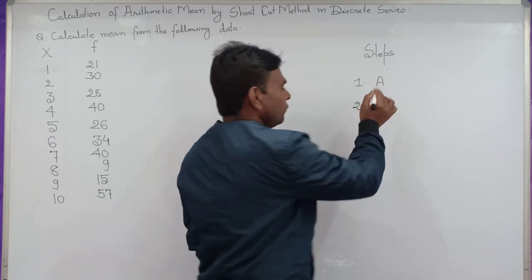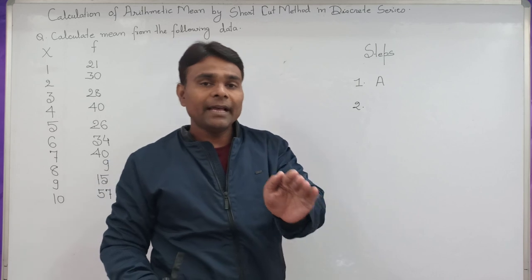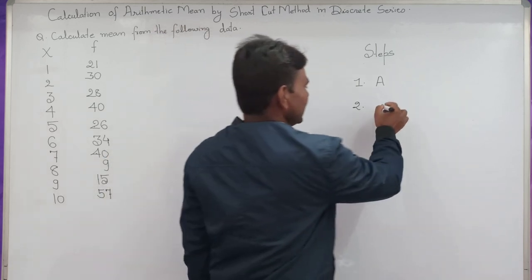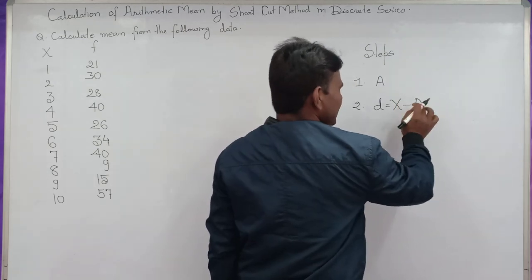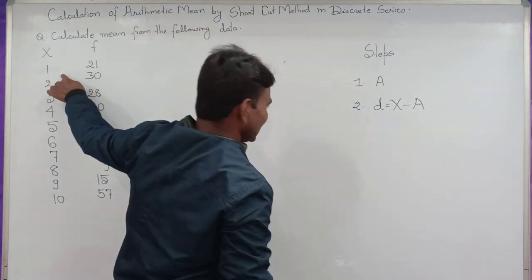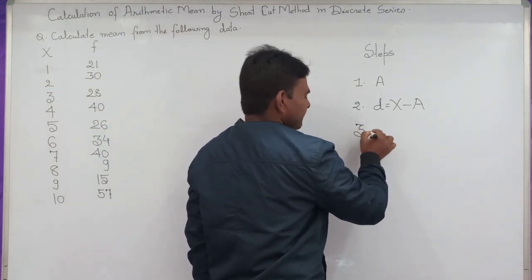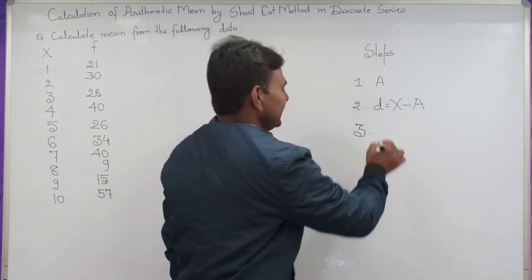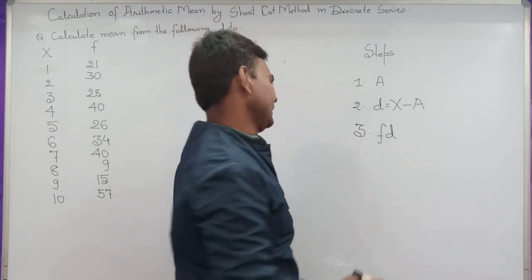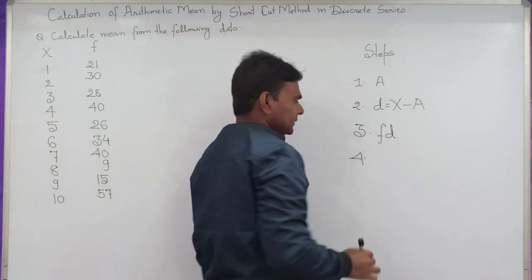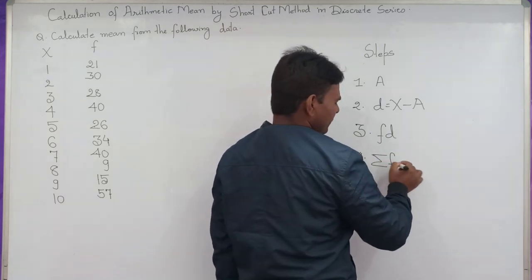After that, find out the variation of each variable from the assumed mean, that is D. D equals X minus A, where A is the assumed value and X is given in the course. The third step is to multiply each deviation by its frequency. Fourth step, find the sum of products, which is the summation of FD.